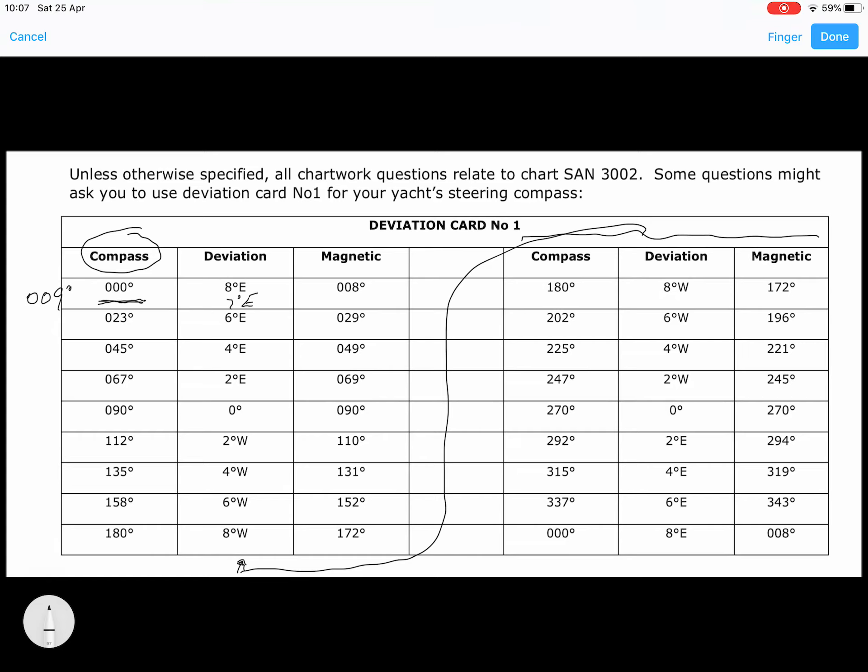Let's have a look at a number like 207 degrees ship's compass. 207 is probably closer to there, so we would probably use the 6 degrees west.